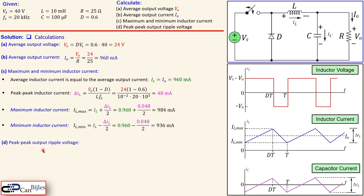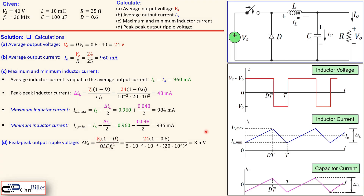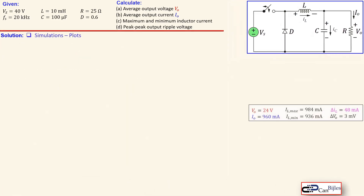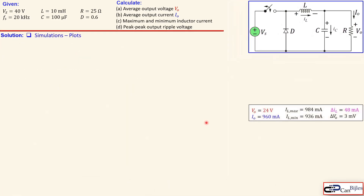The peak-to-peak output ripple voltage is given by this expression, and that will be 3 millivolts. You can see it is dependent on the value of the capacitor, inductor, switching frequency, duty cycle, and output voltage.